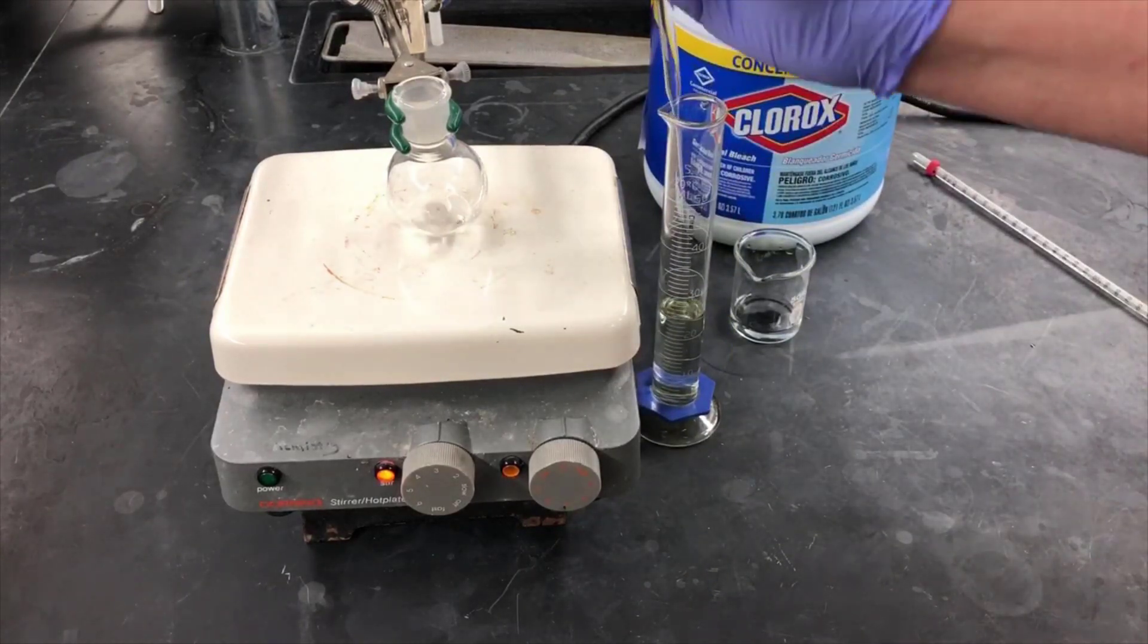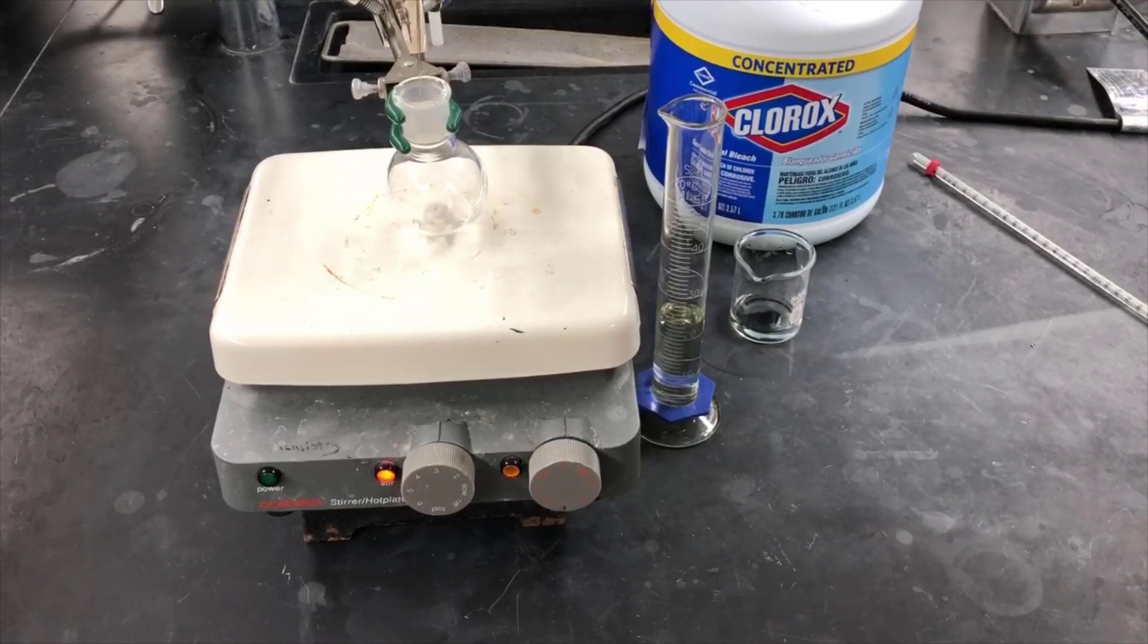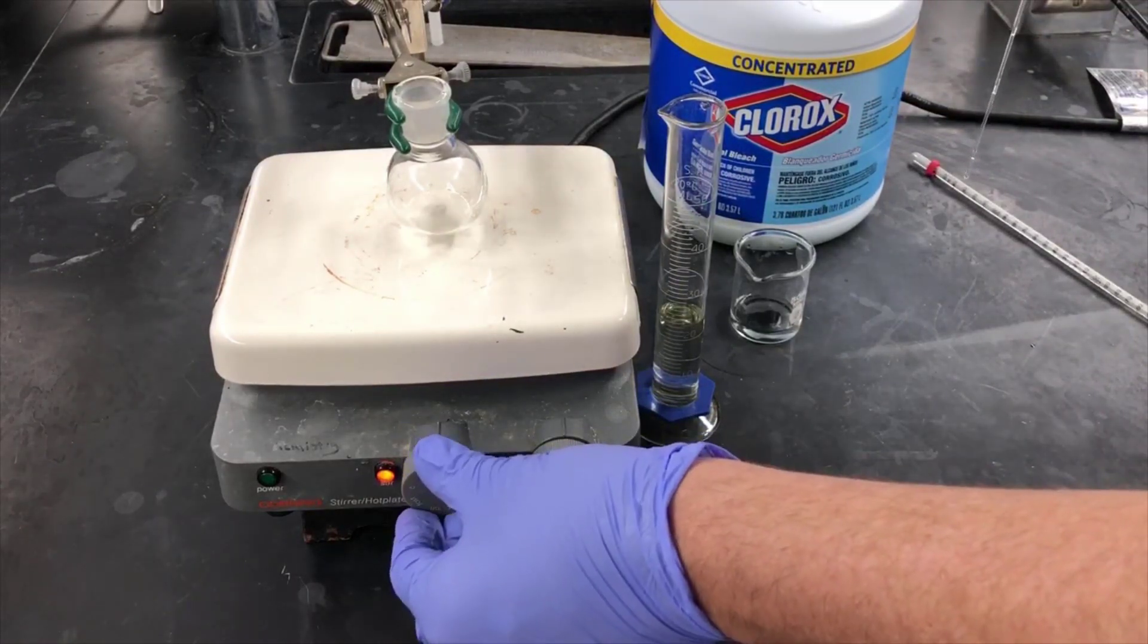Now I'll add the bleach solution to the cyclohexanol. At first, I'm going to be adding it fairly slowly, drop-wise here, with vigorous stirring.